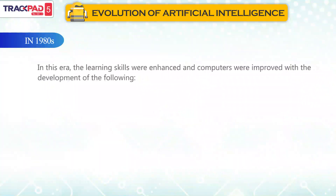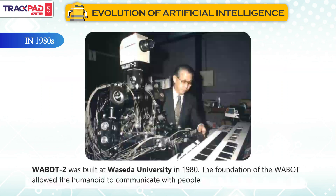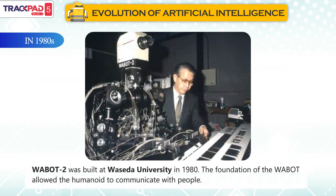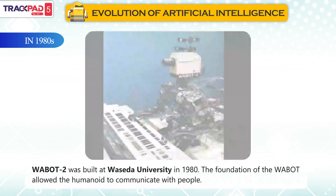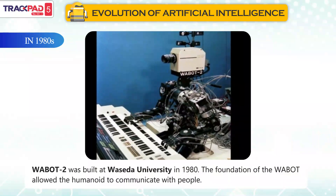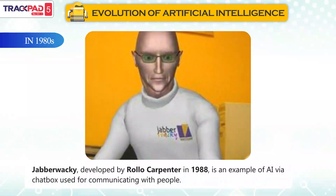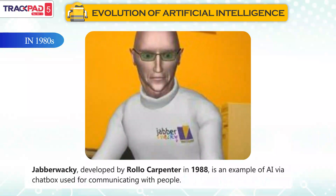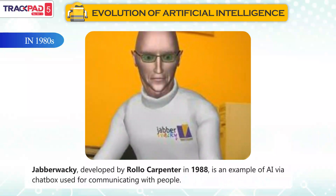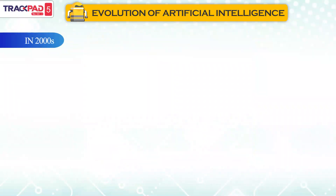In the 1980s, learning skills were enhanced and computers were improved. Wabot 2 was built at Waseda University in 1980, and its foundation allowed the humanoid to communicate with people. Jabberwacky, developed by Rolo Carpenter in 1988, is an example of AI via chatbot used for communicating with people.